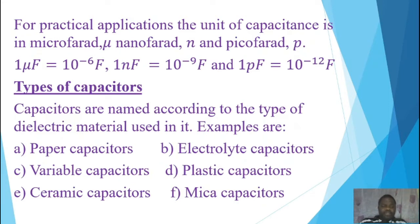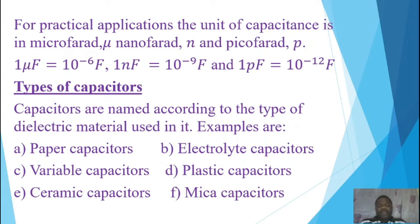Capacitors are named according to the types of dielectric materials used in them. Examples include: paper capacitors, electrolytic capacitors, variable capacitors, plastic capacitors, ceramic capacitors, and mica capacitors.